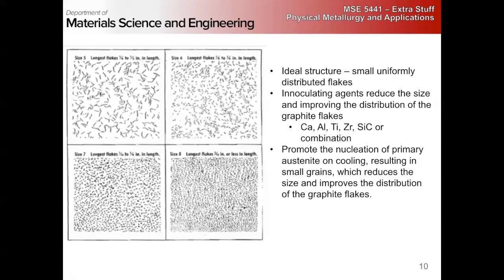The ideal structure for gray iron is small, uniformly distributed flakes — you don't want big, long flakes. Often small amounts of inoculating agents are added: calcium, aluminum, titanium, zirconium, silicon carbide, or combinations of these. These are all essentially grain refiners — they promote the nucleation of primary austenite on cooling, which results in smaller austenite grains and smaller carbon graphite flakes.